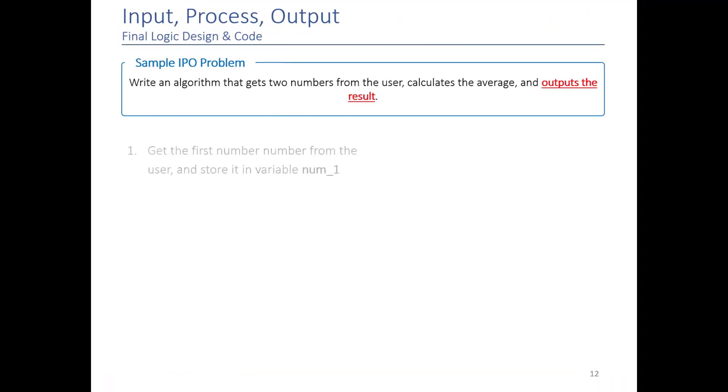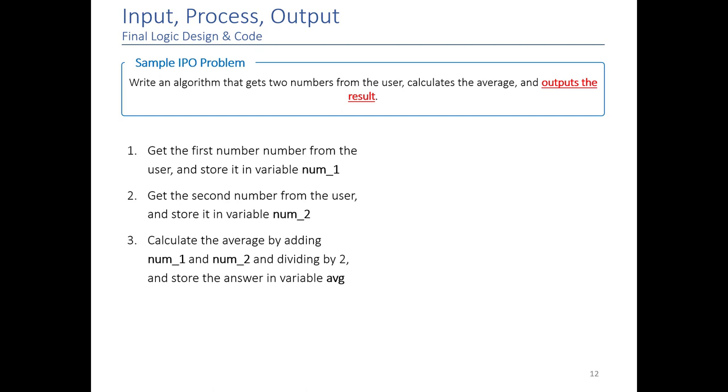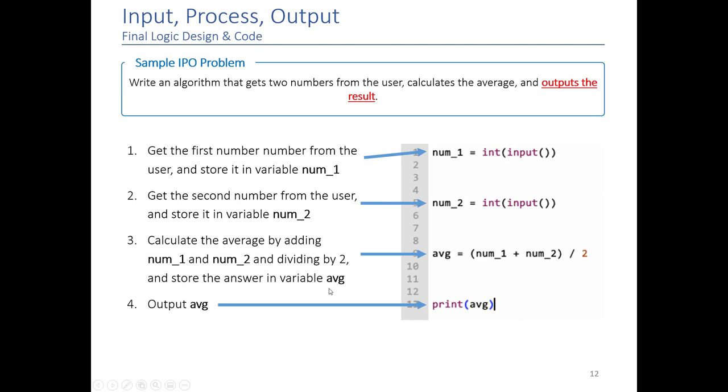So when we put it all together, I wanted you to see the logic design that we wrote in our code and how it corresponds to what we actually ended up writing in Python. So these are the four steps: getting a number, storing it in number one; getting a number, storing it in variable number two; and then adding number one, number two, divided by two, and storing the answer in a variable called average; and outputting the average. So you can see how each one of these corresponds to a single line of code. It's not always going to be that case. Your logic design doesn't always tell you line by line what the code will be. But if you can draw this parallel between your logic design and your code, you get a sense that you are writing logic design at the right level of detail.